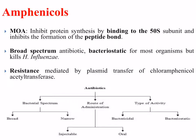The amphenicols are broad-spectrum antibiotics and they're bacteriostatic in nature for most organisms, but they can kill Haemophilus influenzae. Antibiotics can be classified according to their spectrum, their route of administration, and their type of activity. Some have a broad spectrum, meaning they can target a number of different bacterial cells, whereas others have a narrower spectrum and may only target certain gram-negative or gram-positive bacteria. Many antibiotics are bactericidal, some are bacteriostatic, meaning they can either kill the bacteria or stop its growth. The route of administration is also important — some can be injectable and some can be taken orally via tablets.